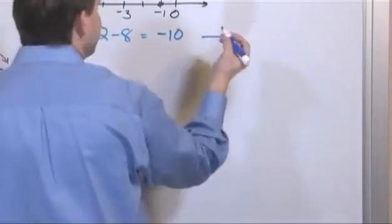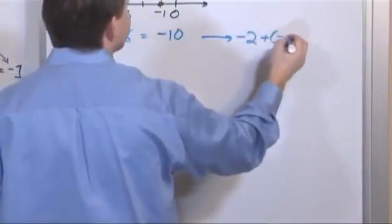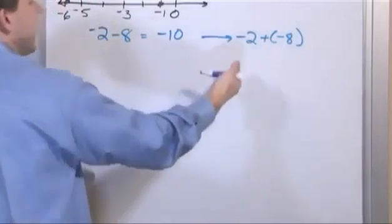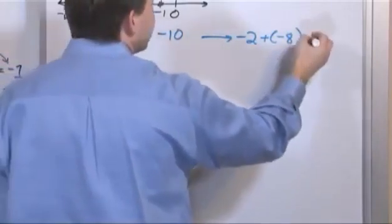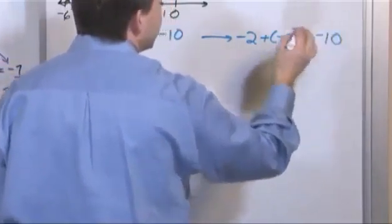And putting a negative, and that's because it's exactly the same thing as negative 2 plus a negative 8. And we said in addition of negative plus negative, we just add the numbers together, and we stick a negative sign on there.